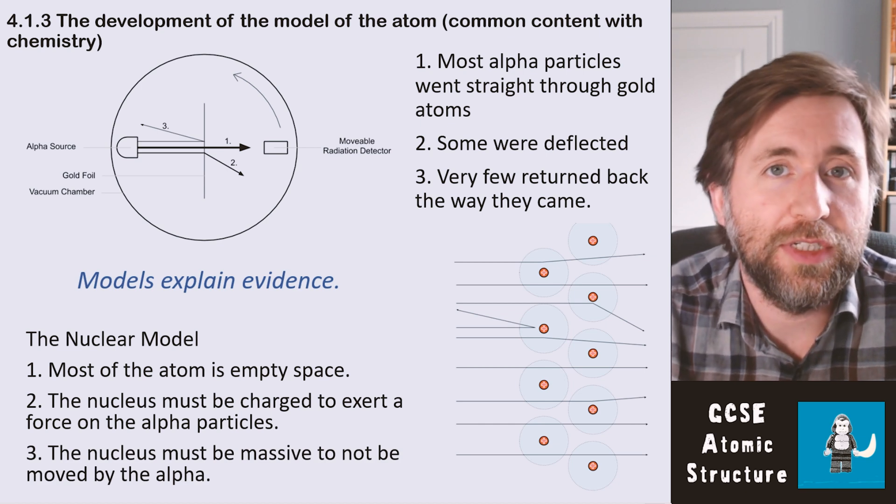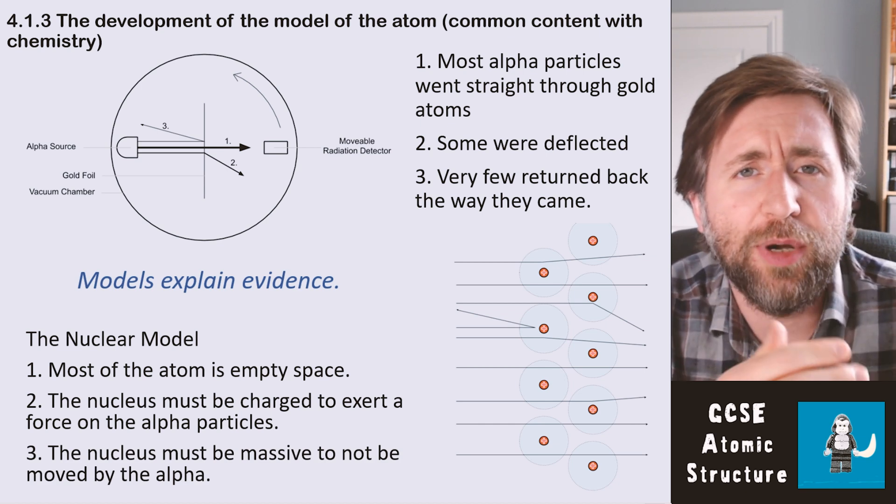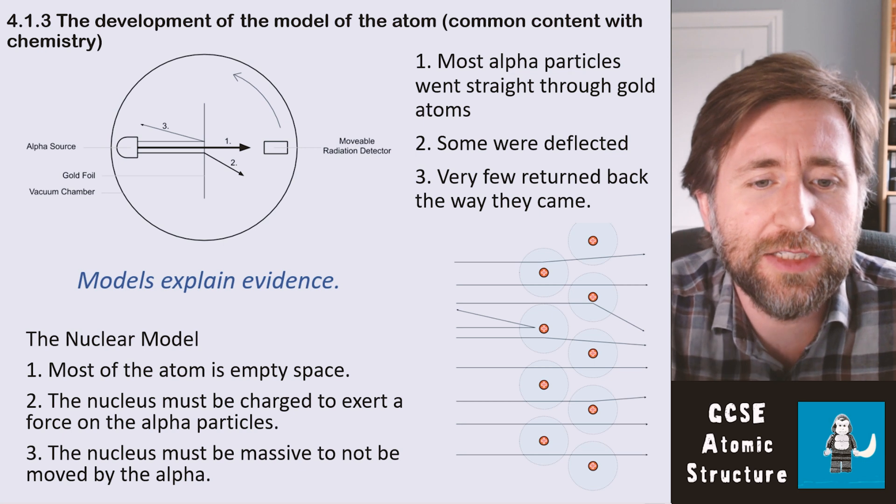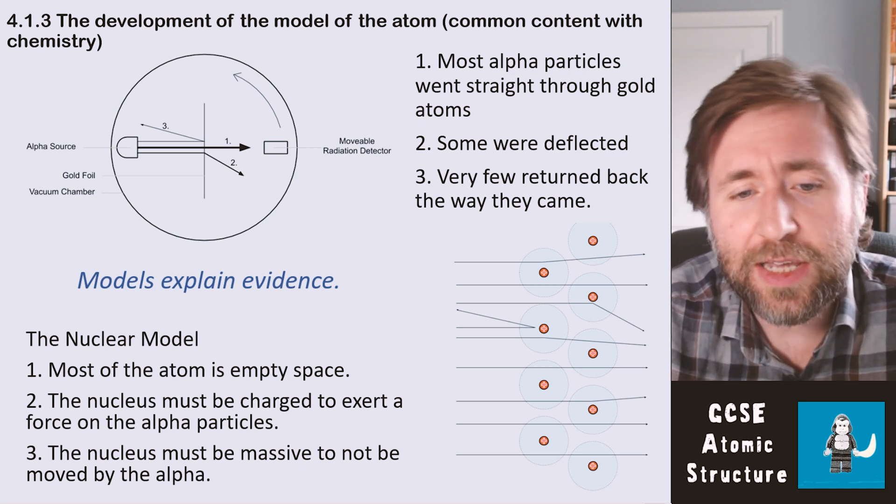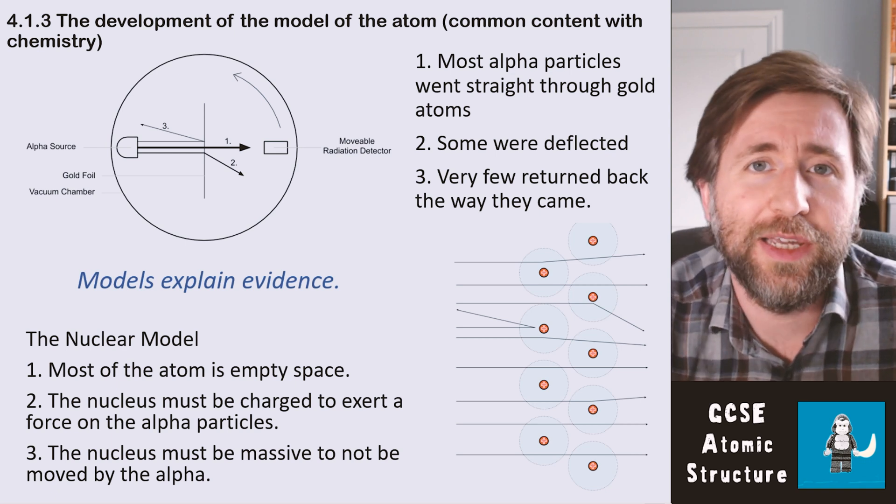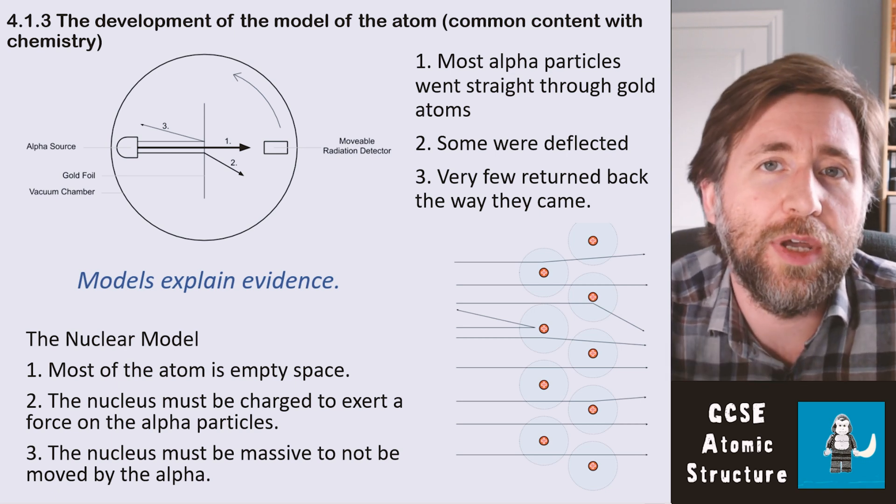The third conclusion is that to deflect an alpha particle, which they knew had a really high kinetic energy, it must have a lot of mass. It must have a great deal of mass to be able to deflect the alpha particle back the way it came and not just be barged out of the way by the alpha particle.